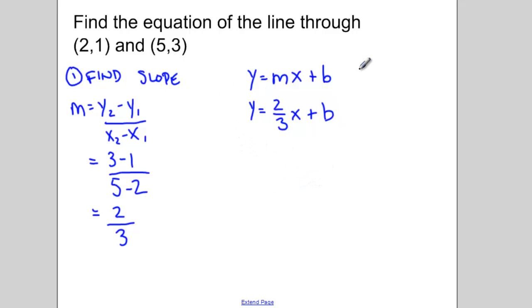And now I'm going to sub in a point. And we're going to sub in a point to find the b value. Our best option is to try and pick a point that would make our manipulation as easy as possible. So I think I'm going to sub in the point 2 and 1. So I end up with 1 equals 2 thirds times 2 plus b. Or 1 equals 4 thirds plus b. Bring the 4 thirds to the other side.